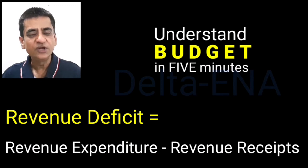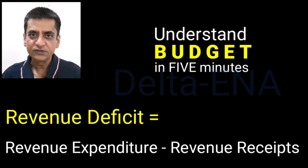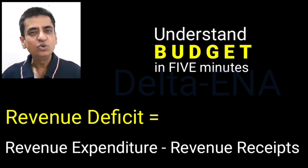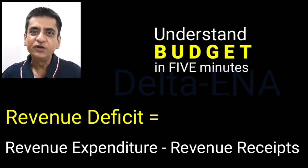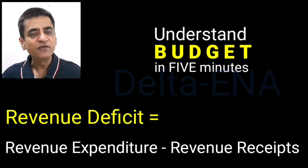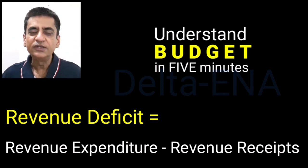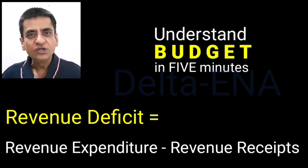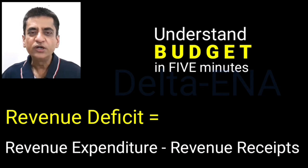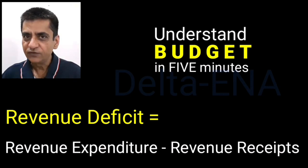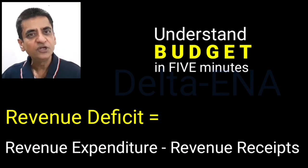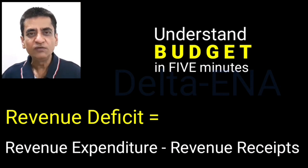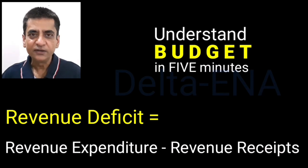Revenue deficit is however more serious than fiscal deficit. Revenue deficit is the balance between revenue expenditure and revenue receipts, and if there is a revenue deficit, it shows that the nation is spending more on its recurring expenses than its capacity to receive in the form of taxation. At the individual level, it is like your monthly expenditure being more than your salary.